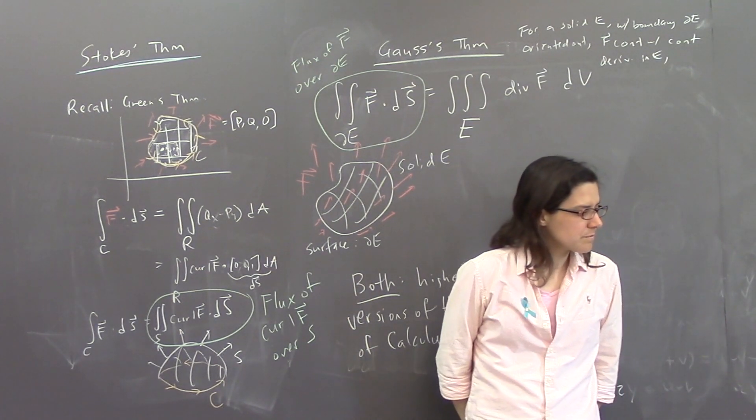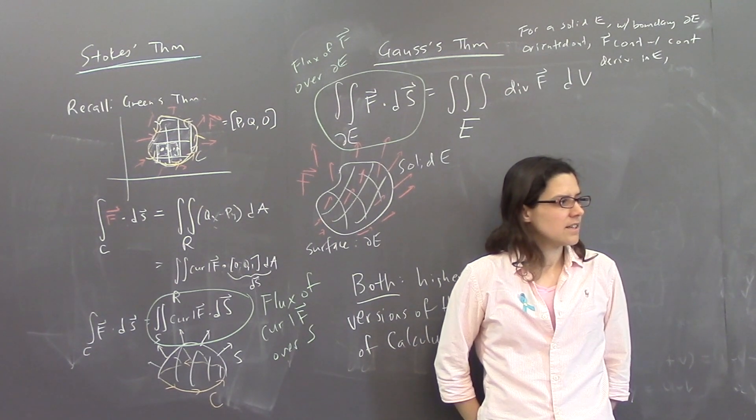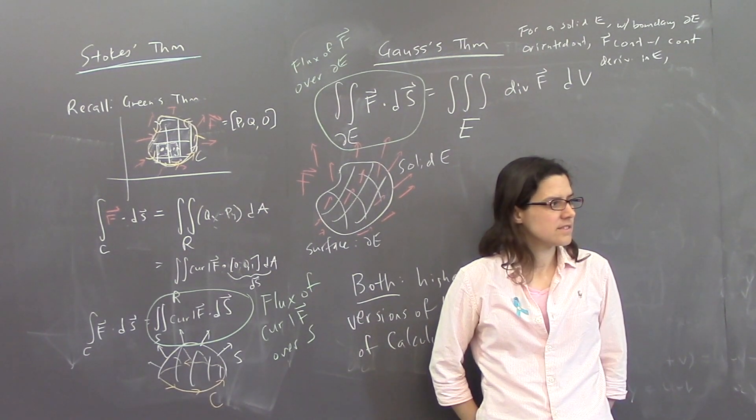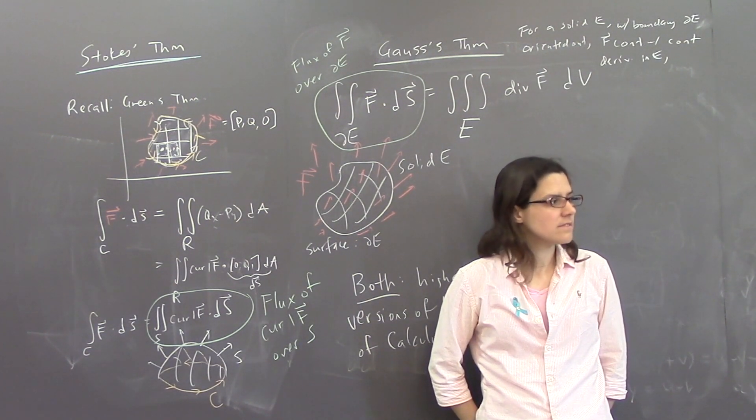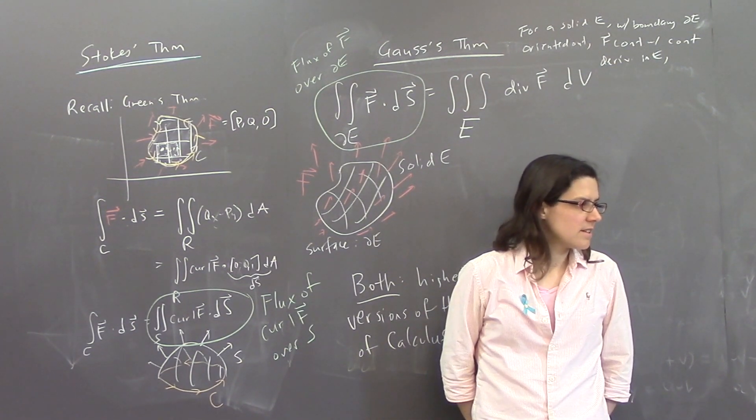So, if you wanted to find, like, if you, instead of using Stokes theorem, you could use, like, Gauss's theorem instead, if, like, the surface was, like, closed and bounded, right? Yep. If your surface is closed, then you can use Gauss's theorem. Yeah. So, if your surface is, so, if your, if your surface is closed, then you,